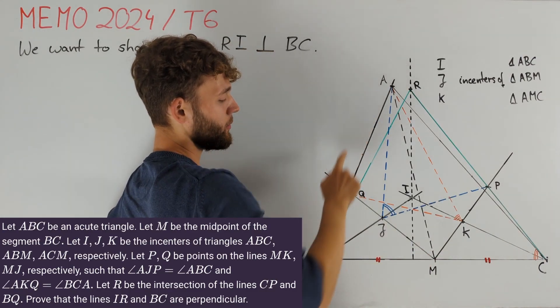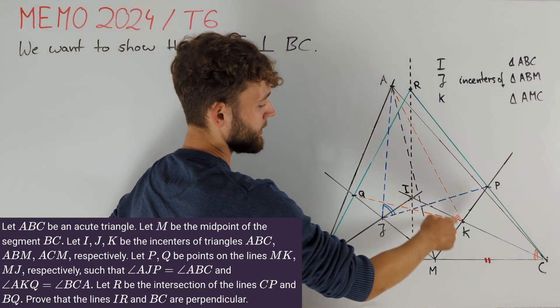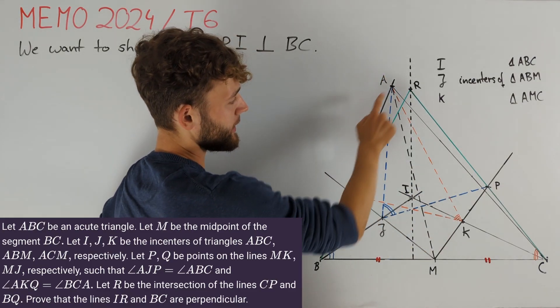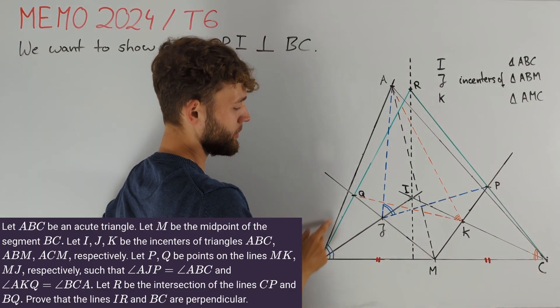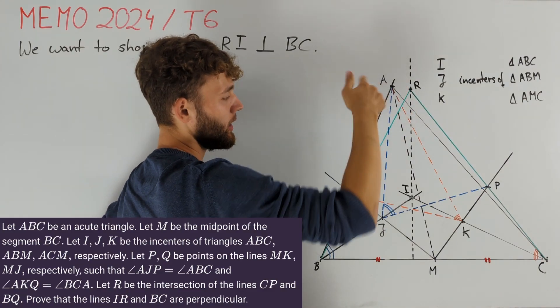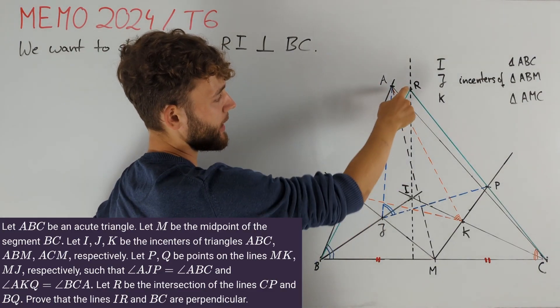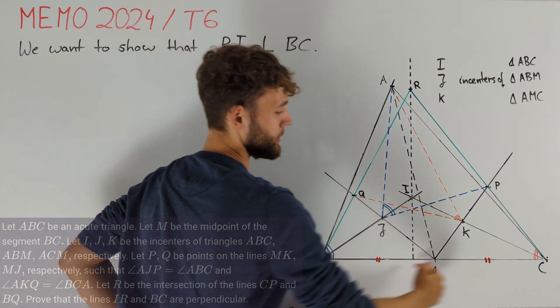In the same way we choose the point Q on line MJ such that angle AKQ equals angle ACB. Lastly we intersect lines BQ and CP to get a point R and we would like to prove that the line passing through R and I is perpendicular to BC.